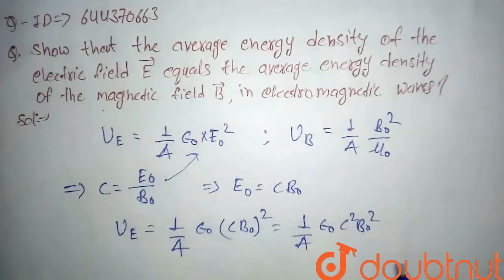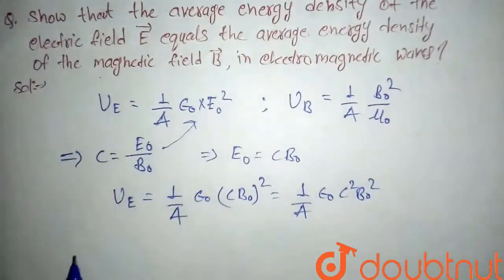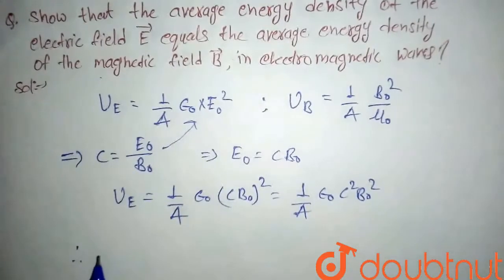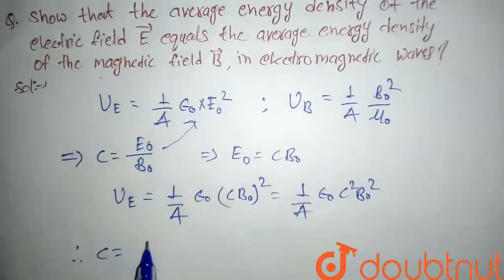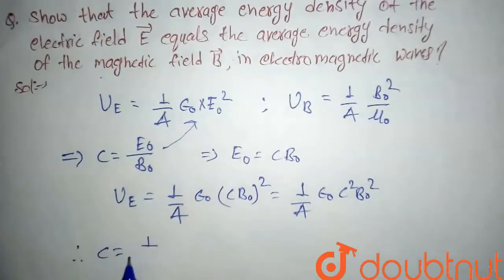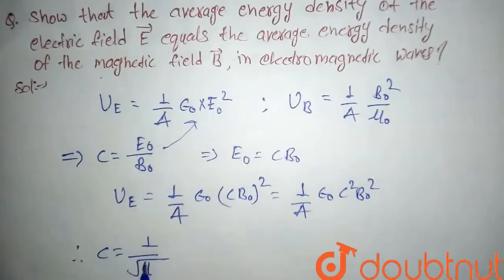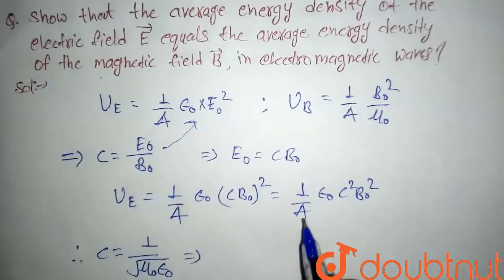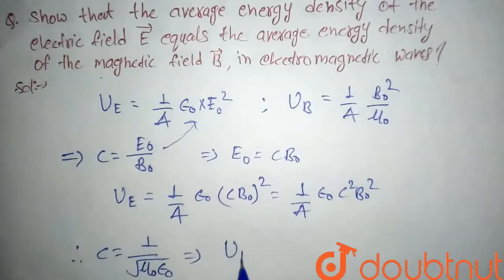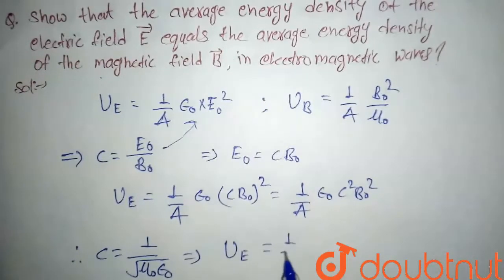We also know that in electromagnetic waves, the velocity c is given by 1 upon the square root of mu naught times epsilon naught. So if we substitute this value for c squared into the expression for U_E, it becomes 1 by 4...